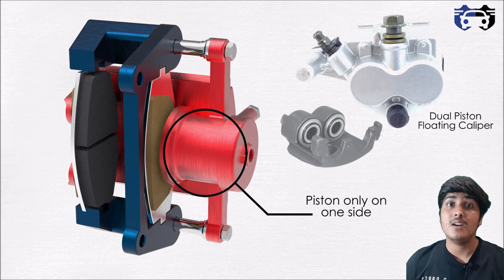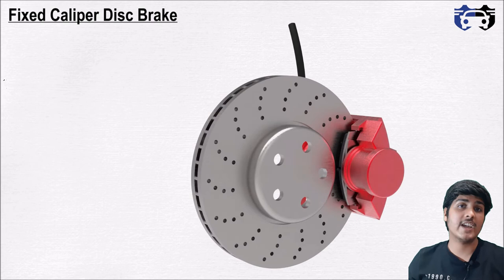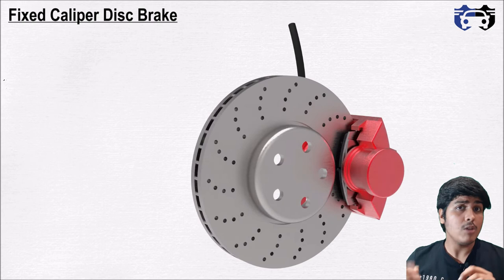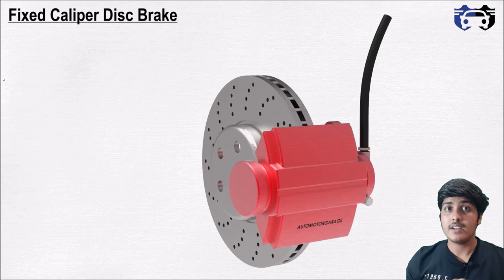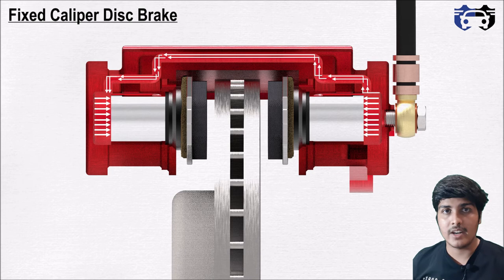Now let's understand the other type of hydraulic disc brake: the fixed caliper hydraulic disc brake. As the name implies, the caliper is fixed — it does not float or slide like the floating caliper. Here we have pistons on both sides of the caliper, and there can be a single piston or multiple pistons on each side. All components of the fixed caliper are almost the same as the floating caliper, with the key difference being pistons on both sides, and the caliper frame has an internal channel for transferring fluid from one side to the other.